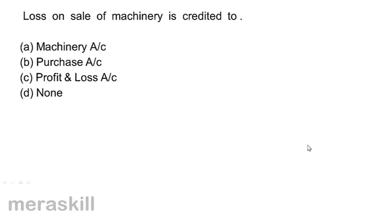Loss on sale of machinery is credited to: A. Machinery account, B. Purchase account, C. Profit and loss account, D. None. The correct answer is A, Machinery account.